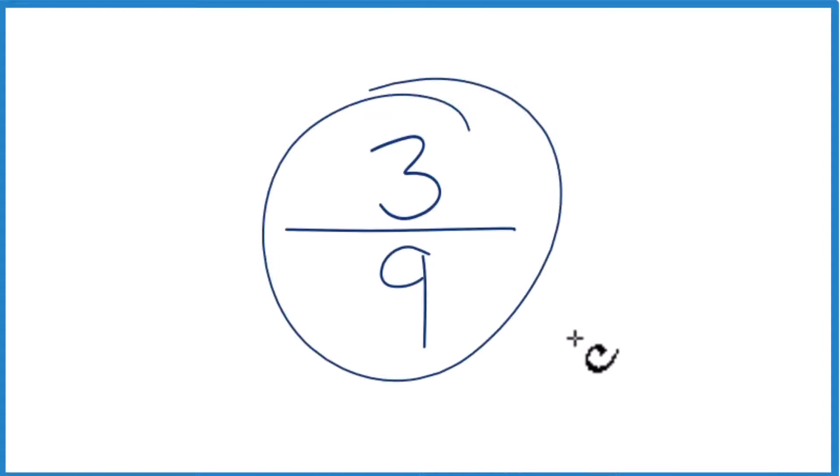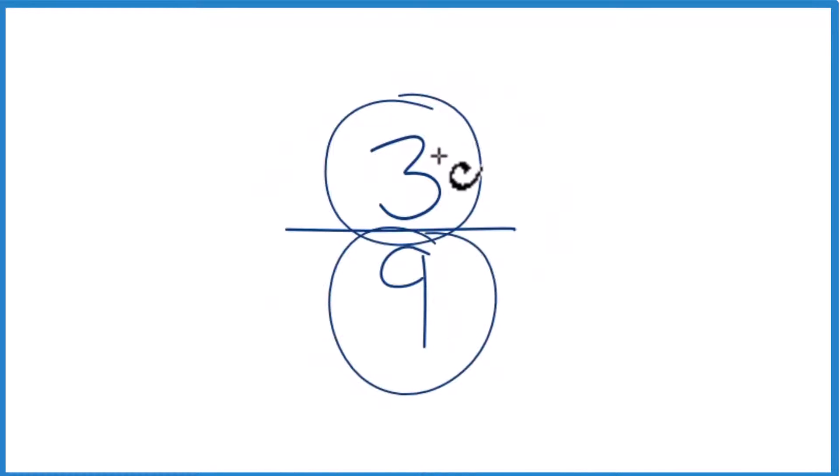Let's write the fraction 3 ninths as a decimal. So 3, that's smaller than 9, so we divide 3 by 9, we'll get a number less than 1. That'll be our decimal.